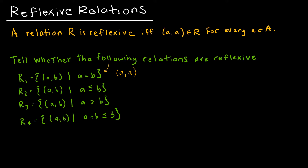R1 is reflexive. R2 is also reflexive: as long as A is less than or equal to B, we're saying A is less than or equal to A, and that is absolutely true. So (A, A) would be an element in that set. The others would not work because A cannot be greater than itself, so (A, A) is not an element of that set.